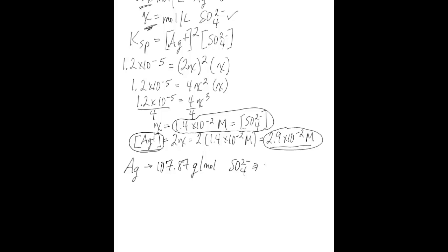Now convert the molarity of sulfate and the molarity of silver to grams per liter, which is another way to express solubility. To do that, you need the molar mass of both silver and sulfate. Using the periodic table, the molar mass of silver is 107.87 grams per mole, and for sulfate it is 96.07 grams per mole. Multiply the concentration in molarity by the molar mass to get solubility in grams per liter.